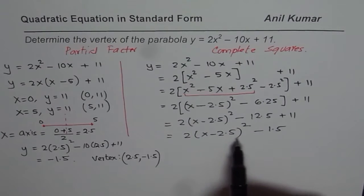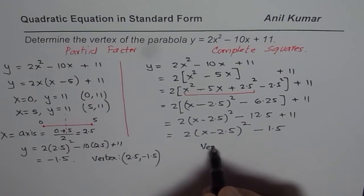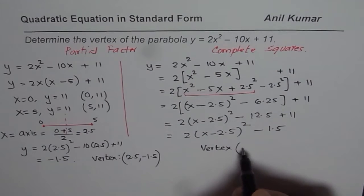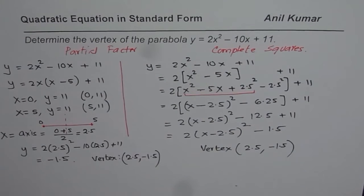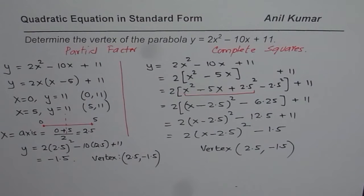So from here we have the equation in vertex form. You can easily write down the vertex. Vertex is 2.5 is the x value, y value is minus 1.5. You get exactly the same answer. So you could follow either of these two methods to find the vertex when the equation is given to you in standard form. I hope that helps. Thank you and all the best.